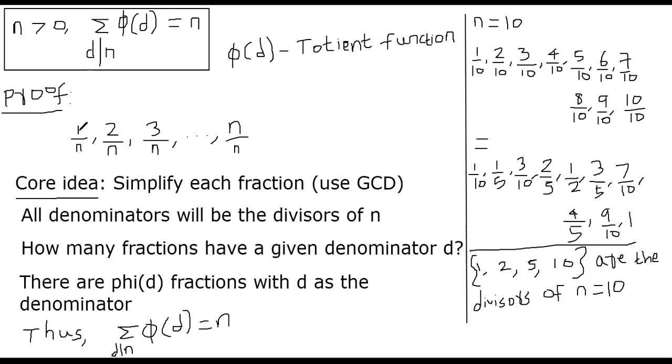We consider the sequence of fractions 1/n, 2/n, all the way until n/n. The core idea is to take each fraction and simplify it. We can always simplify a fraction by computing the GCD of the numerator and denominator. Once you simplify any fraction a/b from this list, it will have the property that gcd(a,b) = 1.